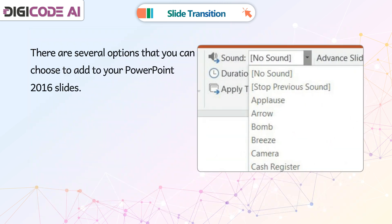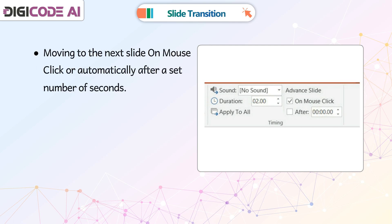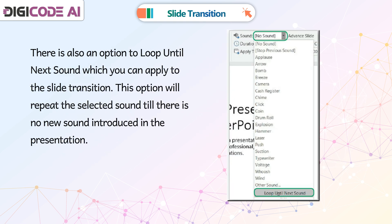There are several options that you can choose to add to your PowerPoint 2016 slides: sound and its duration, whether to apply to this slide only or apply to all slides, and moving to the next slide on mouse click or automatically after a set number of seconds. There is also an option to loop until next sound, which will repeat the selected sound until there is no new sound introduced in the presentation.